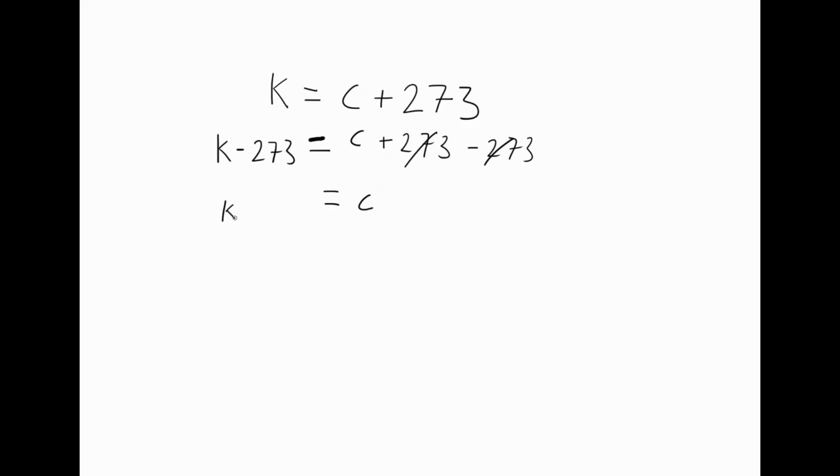So C equals K minus 273. We would usually write it this way round and we would say that C equals K minus 273. Now this is the same principle for any algebra that you do. We find out what we need to do to get the letter by itself. We do whatever we need to do. In this case it was subtract 273, and then we do the same to the other side.